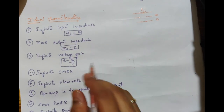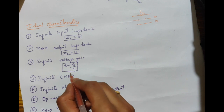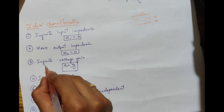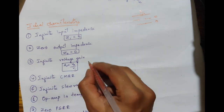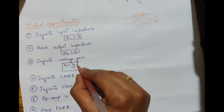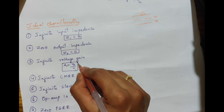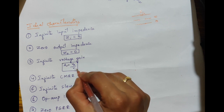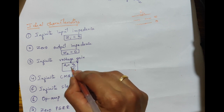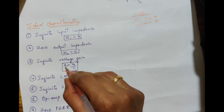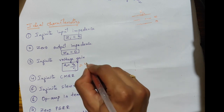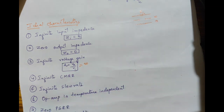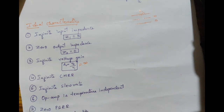The third characteristic is infinite voltage gain, where the voltage gain is given by the ratio of output voltage to input voltage. For any value of input voltage, the voltage gain will be almost equal to infinity.